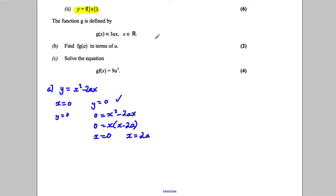So we know it's a quadratic, and we know it's got roots at x = 0 and x = 2a, and it's a positive quadratic. So it looks something like that.